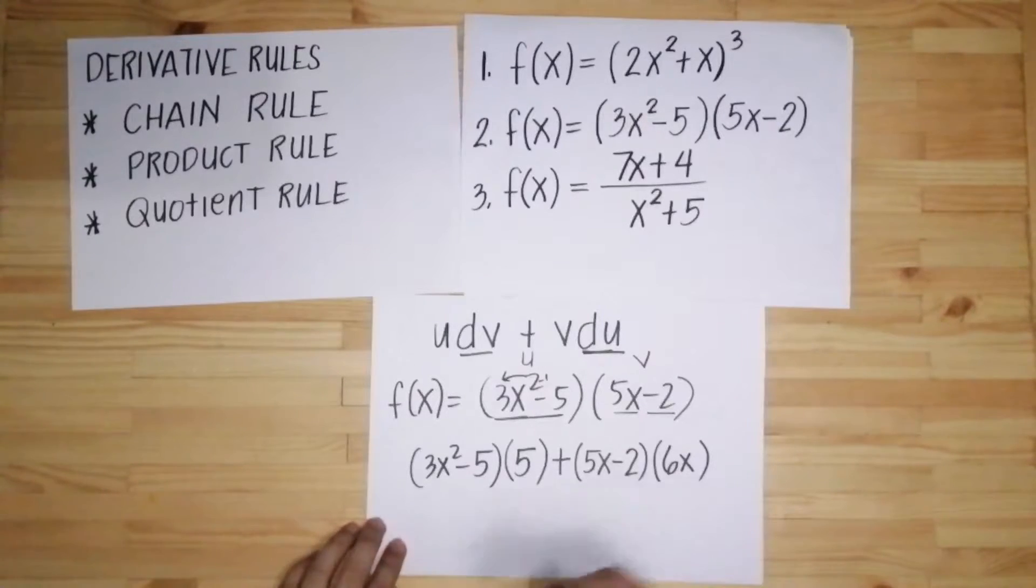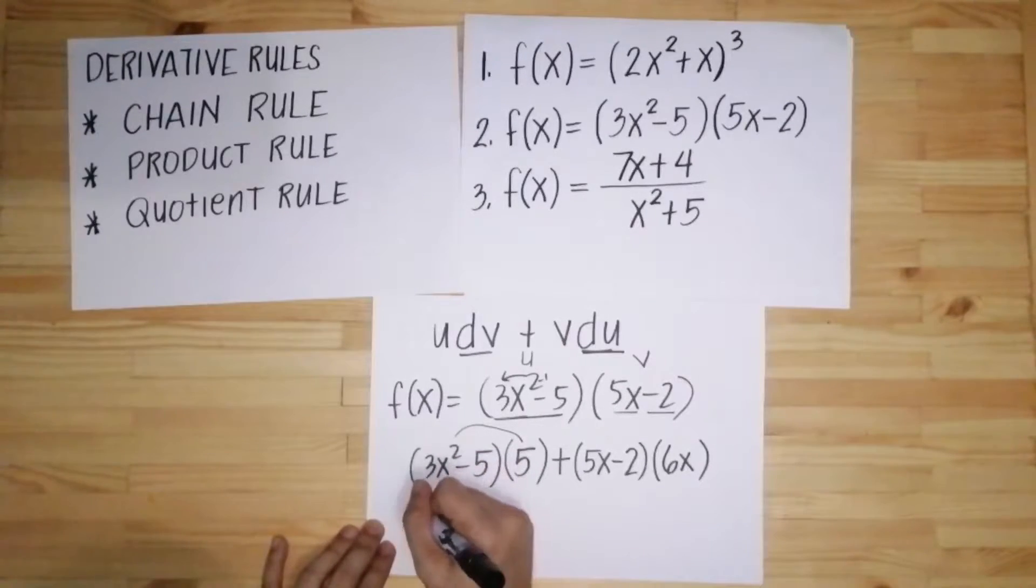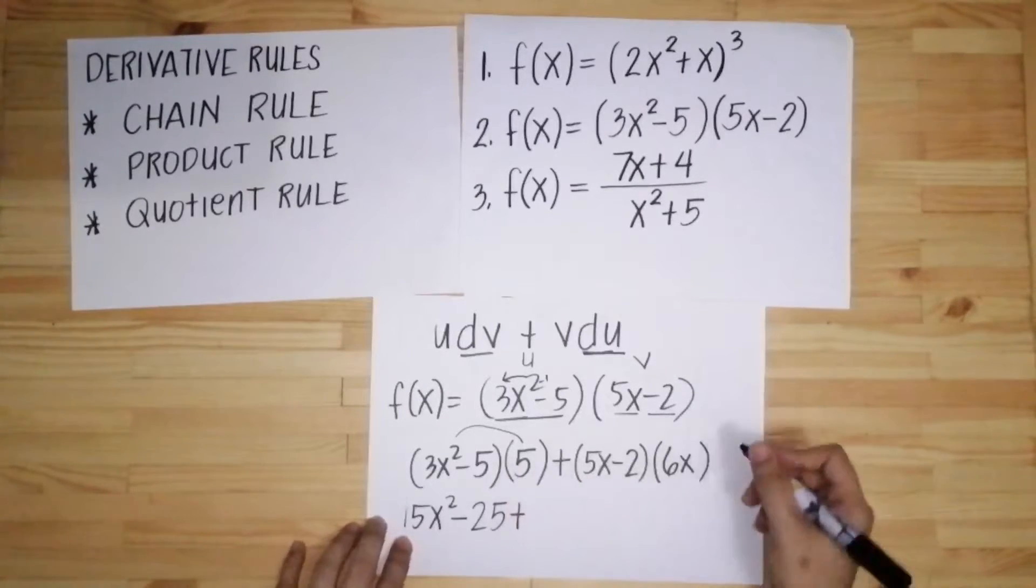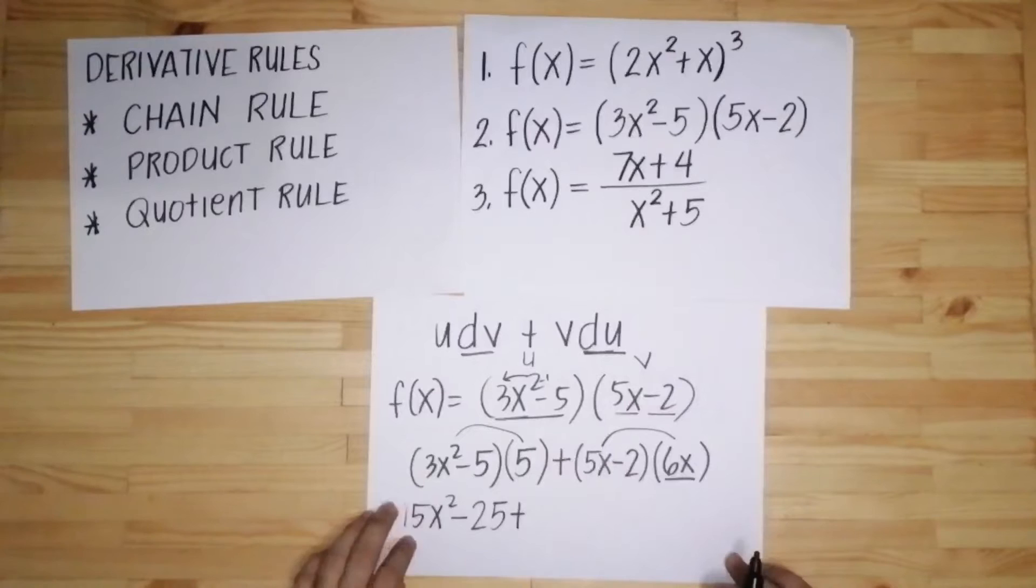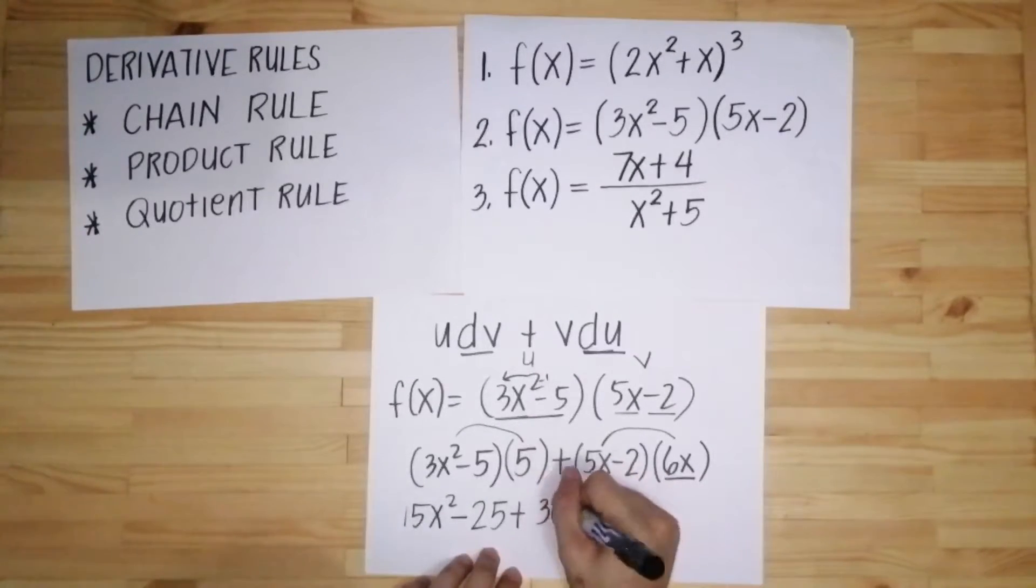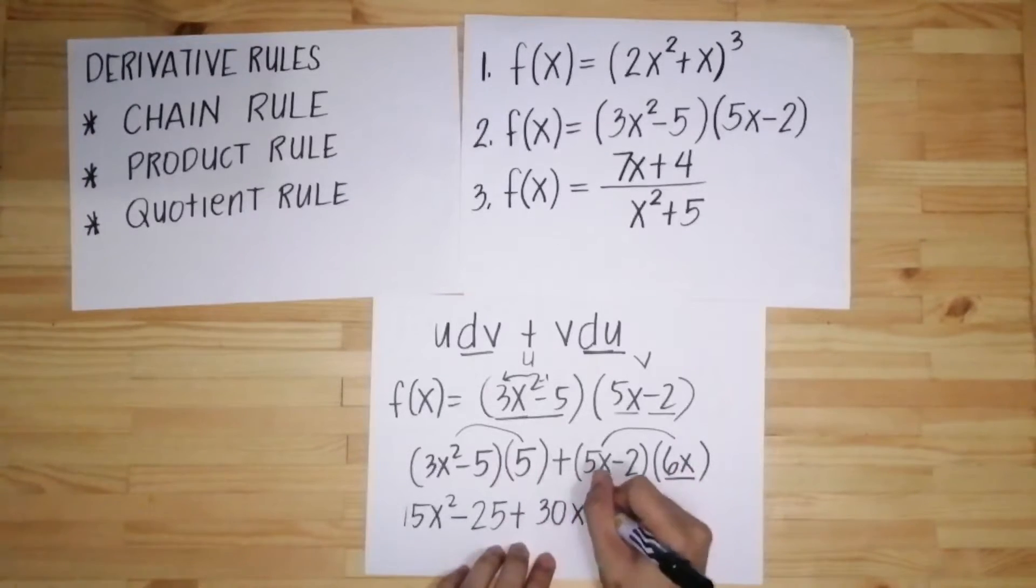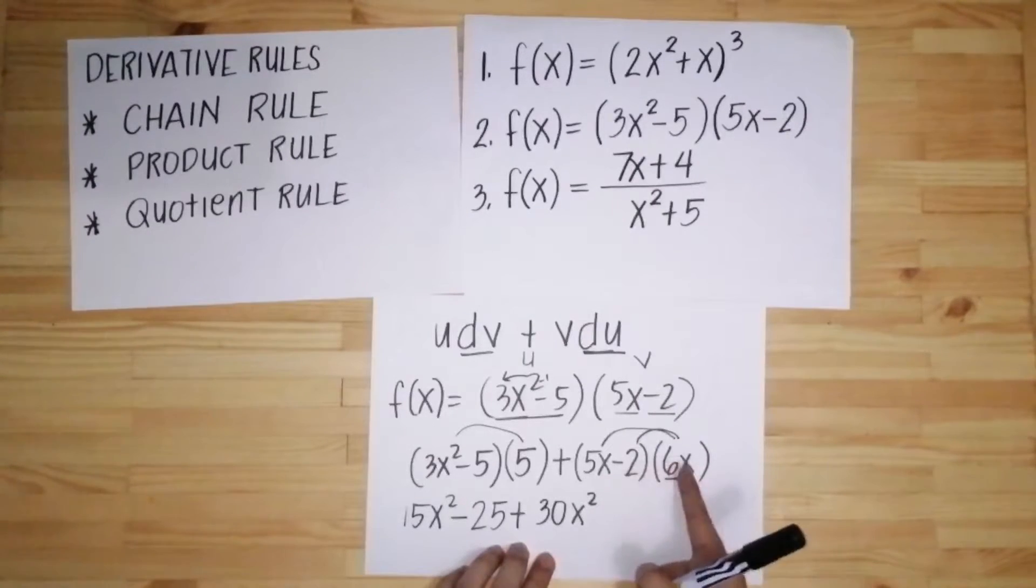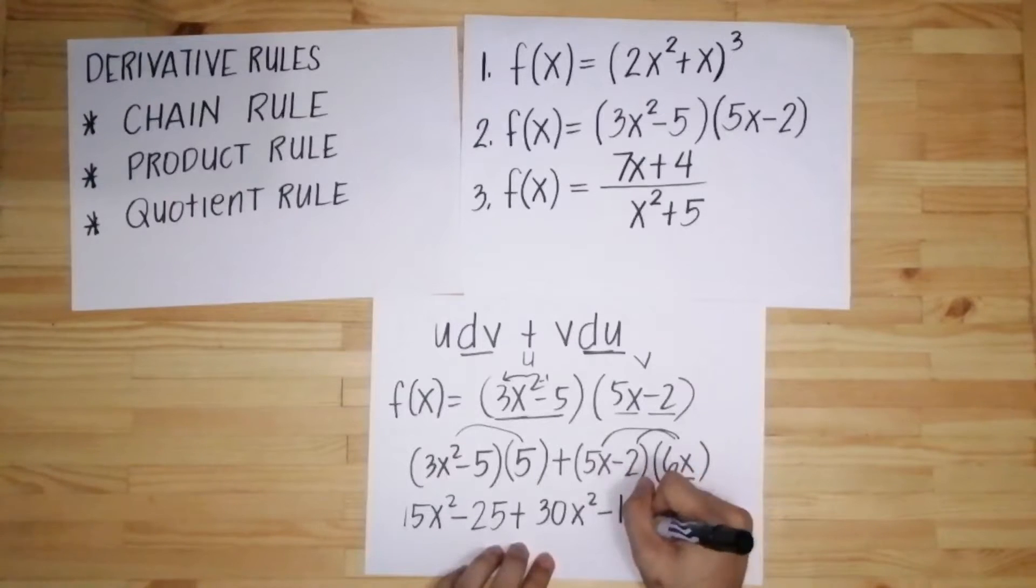Then simplify lang natin. Distribute natin, 5 times 3x squared, magiging 15x squared, and then 5 times negative 5 is negative 25. Plus, times natin ito ulit dito sa parentheses. 6x times 5x equals 30, then may dalawang x, x squared. Then 6x times negative 2, magkaiba ng sign, so negative. 6 times 2 is 12, then ito may x, copy mo x.